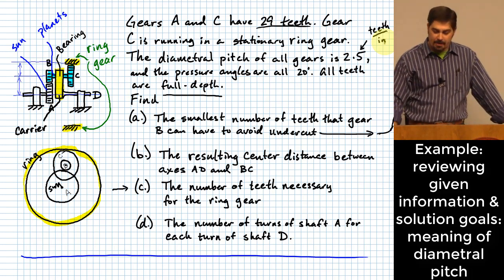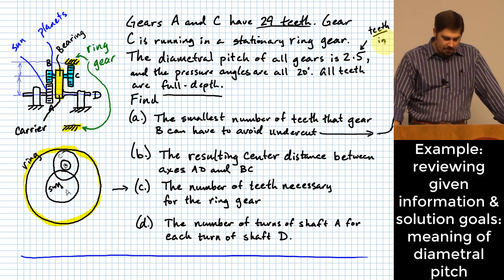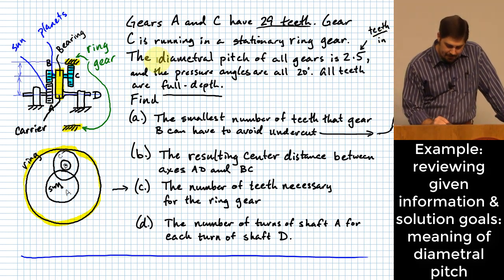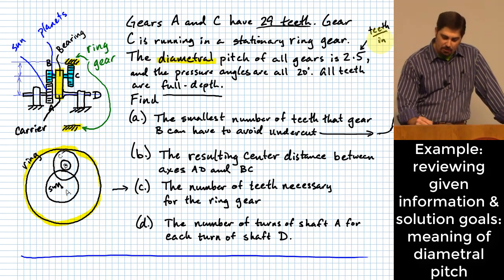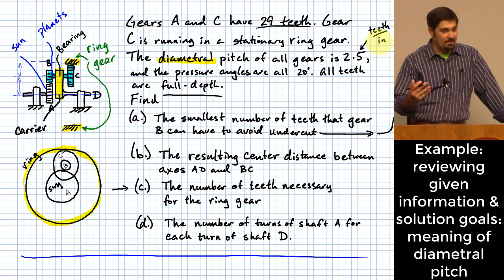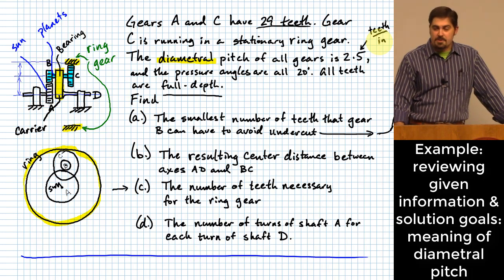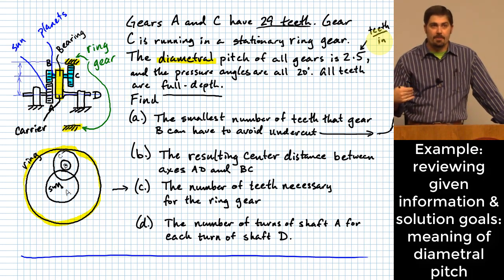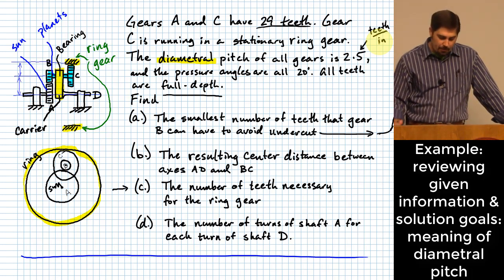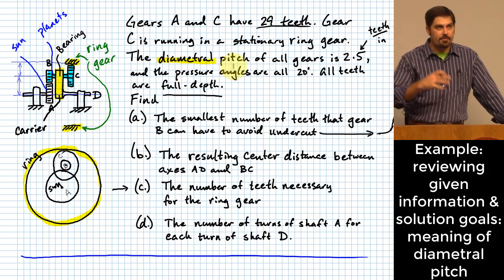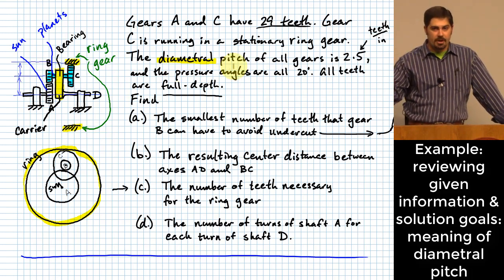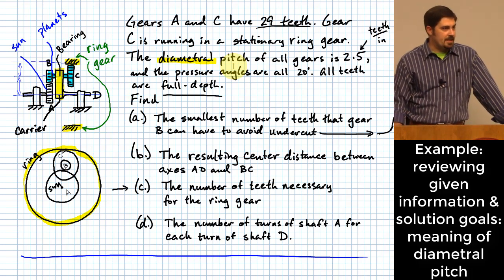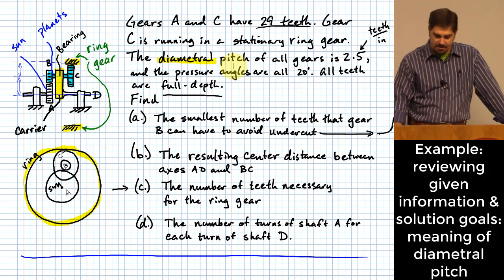For both diametral pitch and circumferential pitch, the diameter or circumference refers to the pitch circle, not any of the other circles we saw in the gear geometry. So 2.5 diametral pitch means 2.5 teeth per inch of pitch circle diameter.